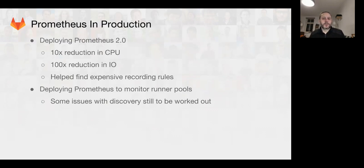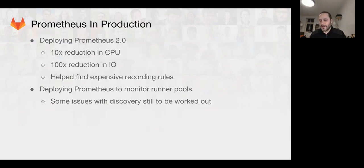We also started deploying Prometheus to monitor the runner pools. Previously we had no idea what resources and the state of all the GitLab.com runners in DigitalOcean were. We have been working on deploying Prometheus to monitor those, and we needed to start with Prometheus 2.0 due to the high rate of churn of the worker droplets.